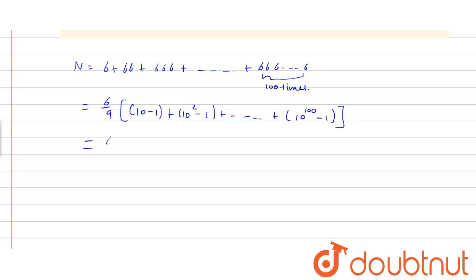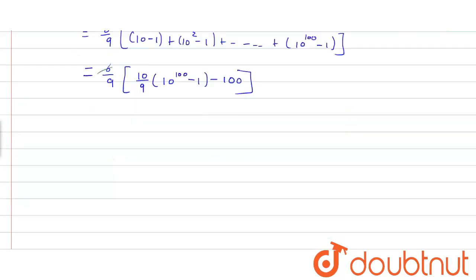By further solving this, we get (6/9) × (10/9) × (10¹⁰⁰-1) - 100. By dividing 6 and 9 by 3 and further solving, we get (2/3) ×